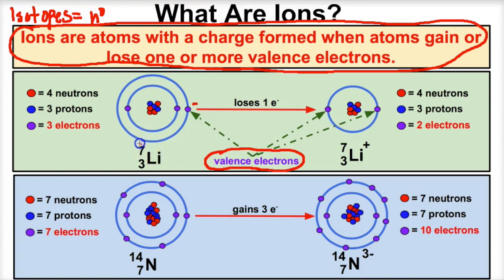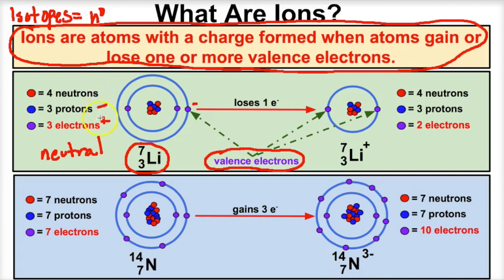Here's a lithium atom. From an earlier video, we learned that all atoms on the periodic table are neutral — they have the same number of protons (positive) as they do electrons (negative), so the total charge cancels out. Every atom on the periodic table is neutral, including this lithium atom. But what will happen to its overall charge if it loses one of its valence electrons?